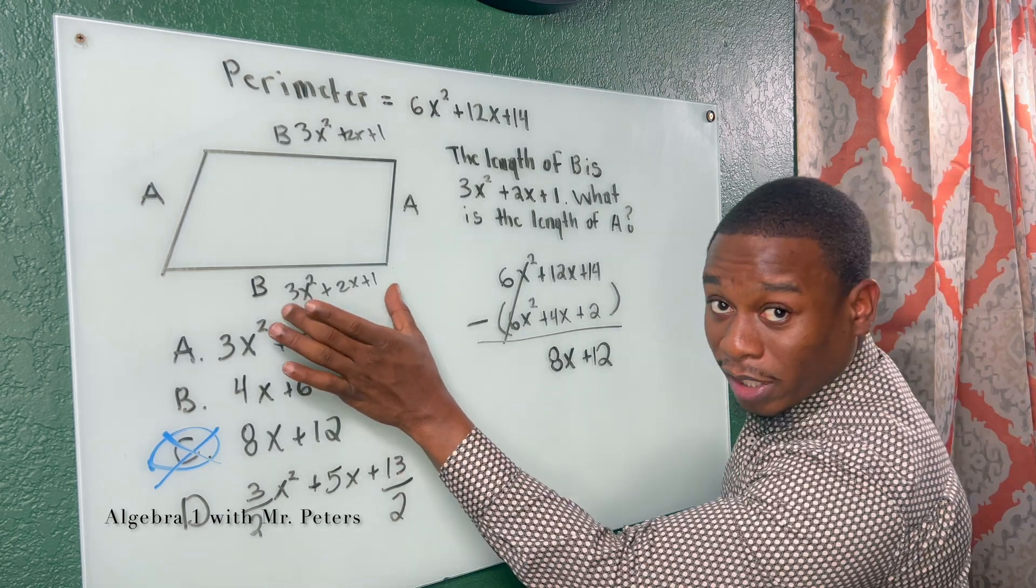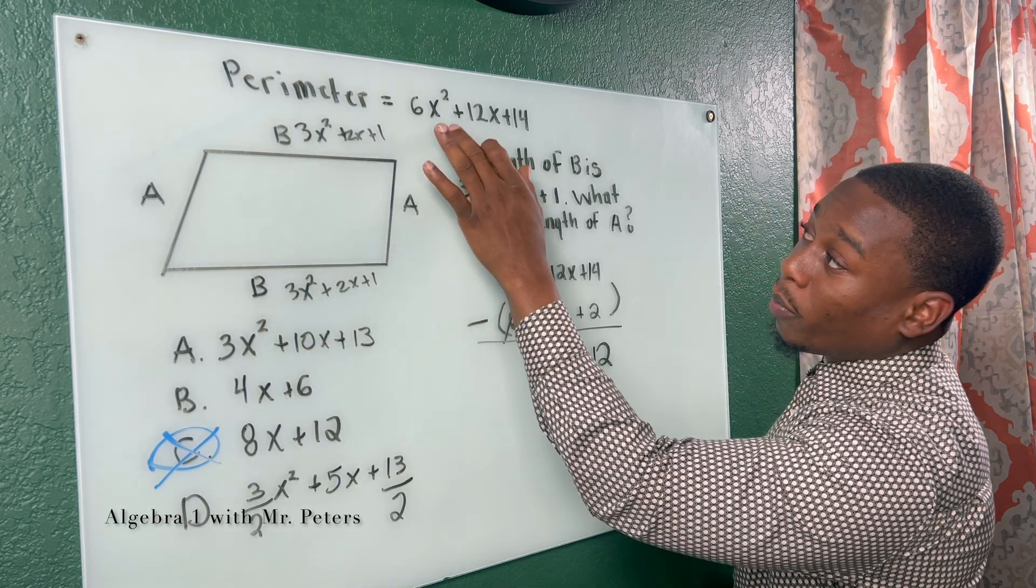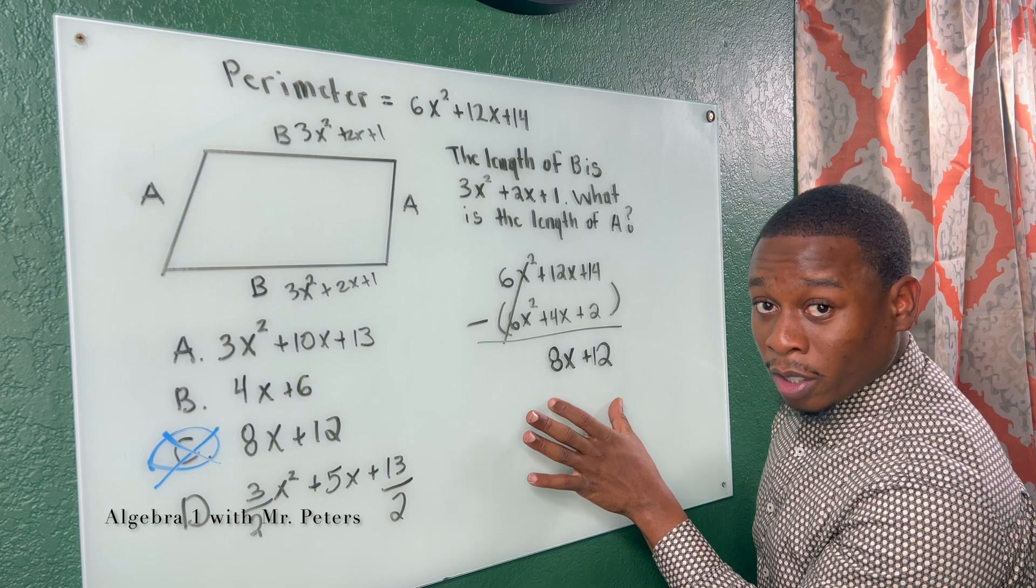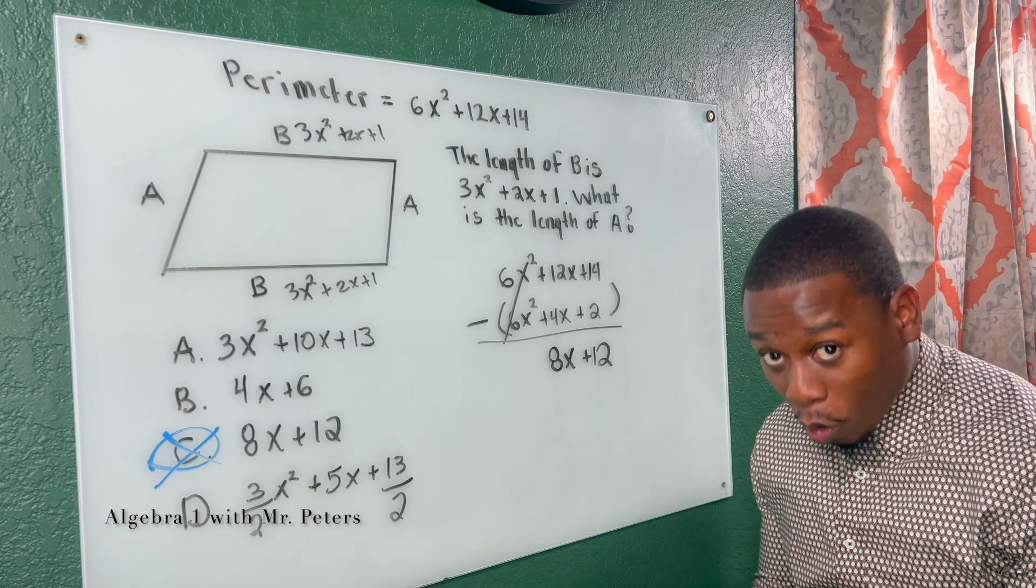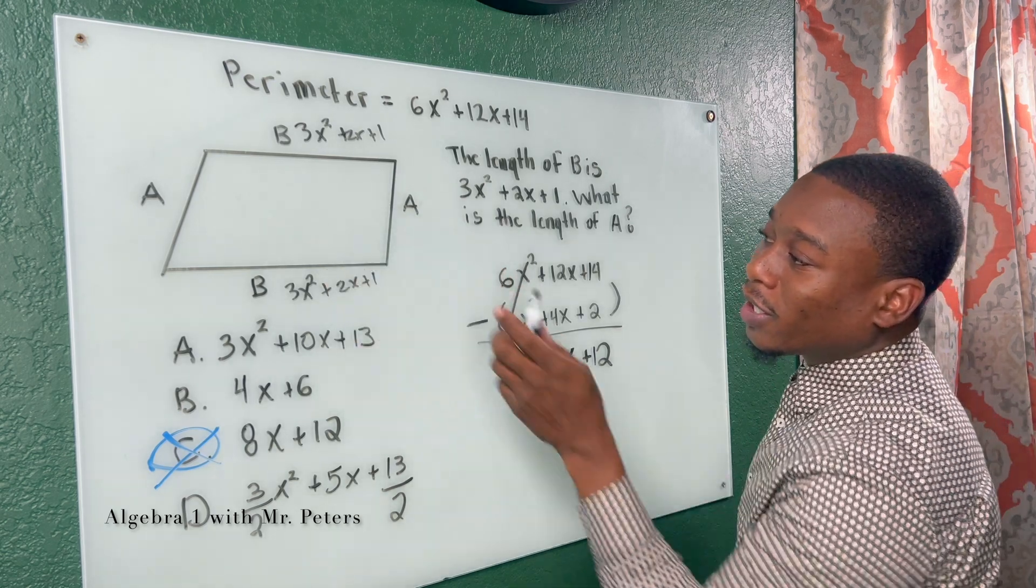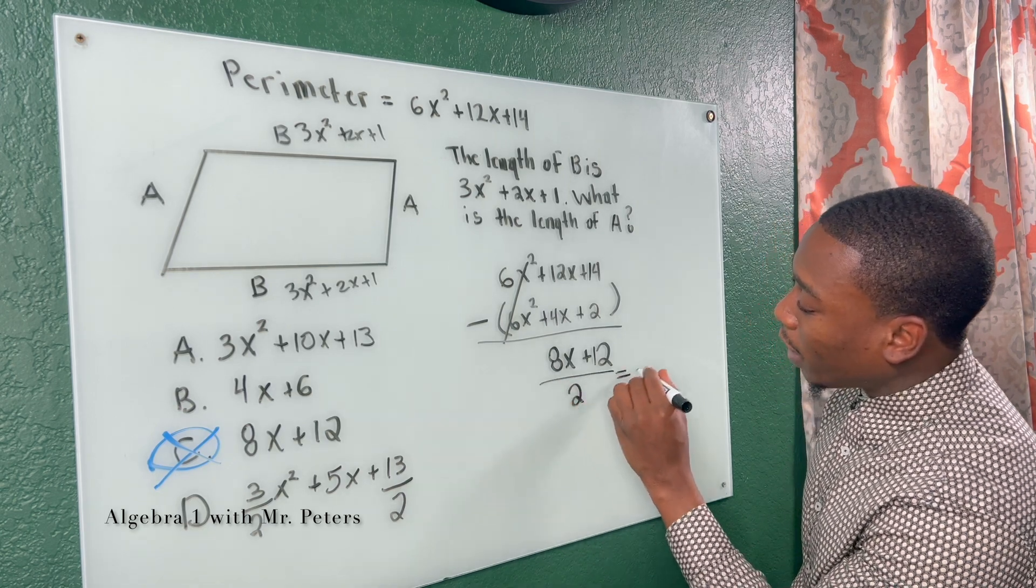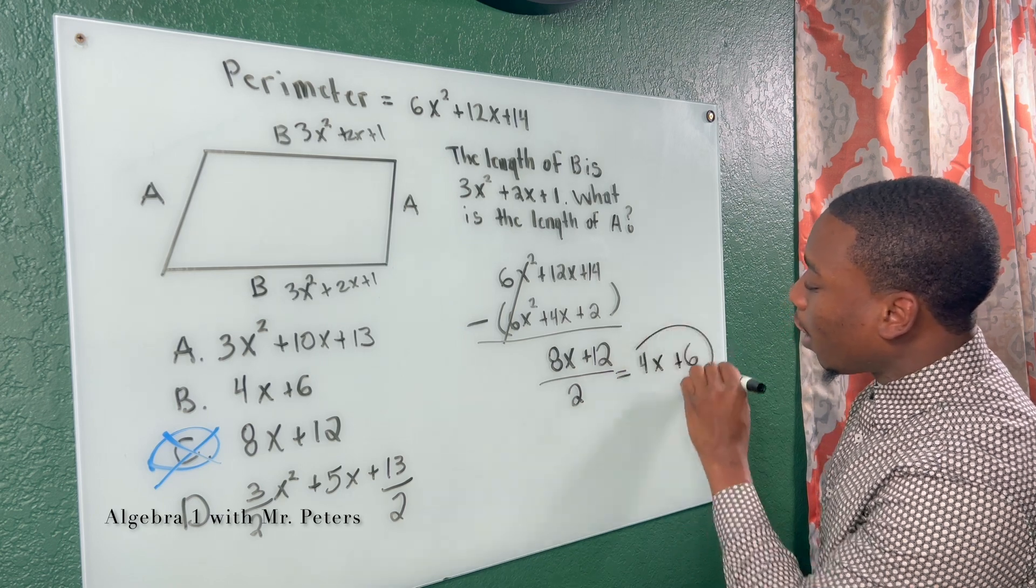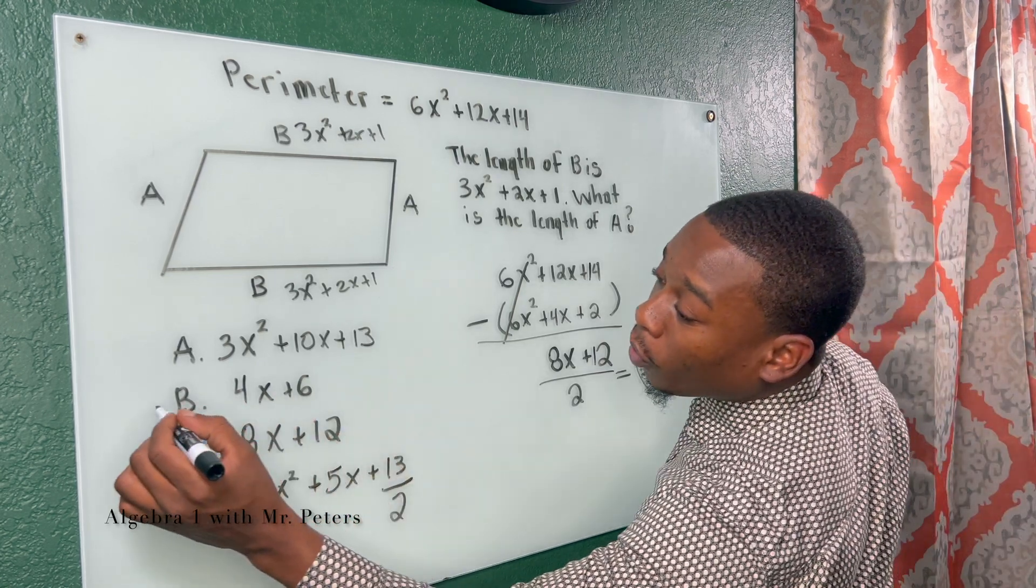So look, they gave us a side of 1B. So we added both the Bs. Then we subtracted it from the perimeter. What we have left over, 8x + 12, this is what both sides of A should equal to when we add both of them. So what does that mean? To find out what each side is, we're going to divide this by 2. So once I divide by 2, my answer will be 4x + 6. And this would actually be our correct answer, which would be B.